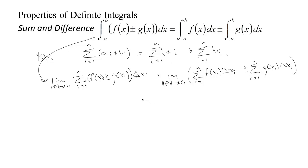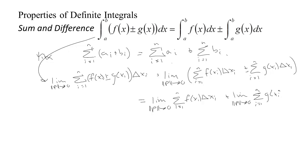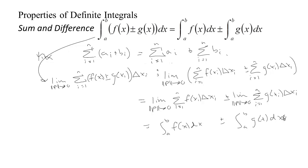We know that the limit of a sum or difference is the sum or difference of the limits, so we can take the limit as the norm of the partition tends to zero of each sum separately. These limits are exactly the definitions of the definite integrals, giving the integral from a to b of f(x) dx plus or minus the integral from a to b of g(x) dx. So because integrals really are limits of sums, they have this same property that sums have.